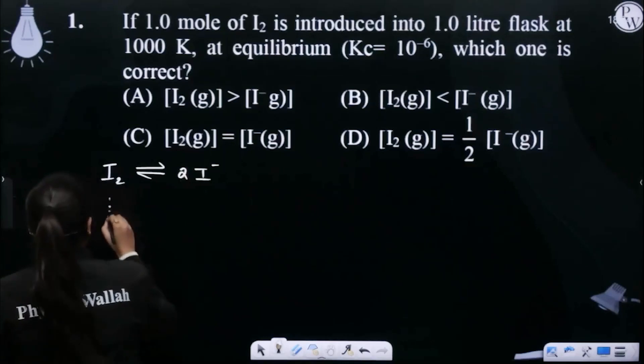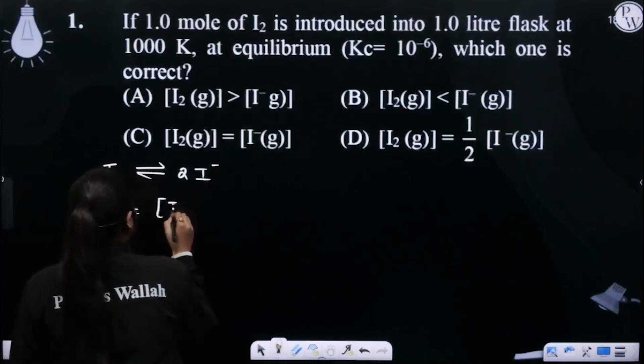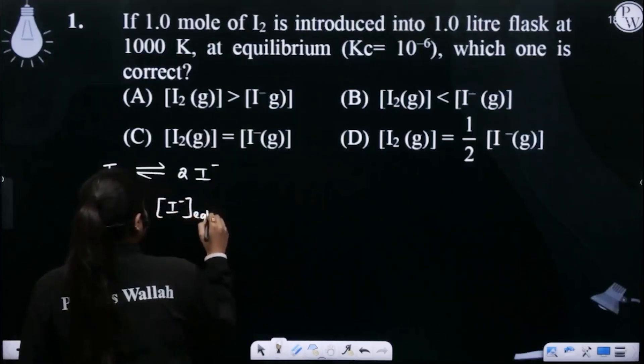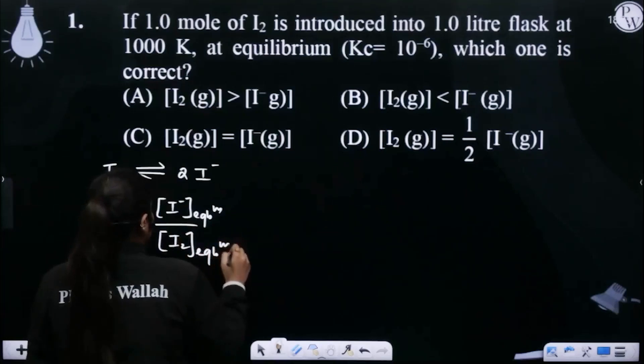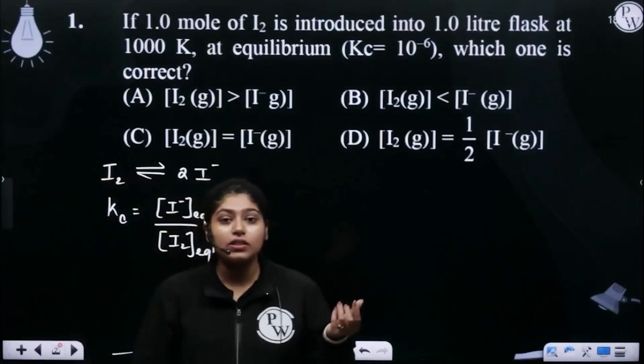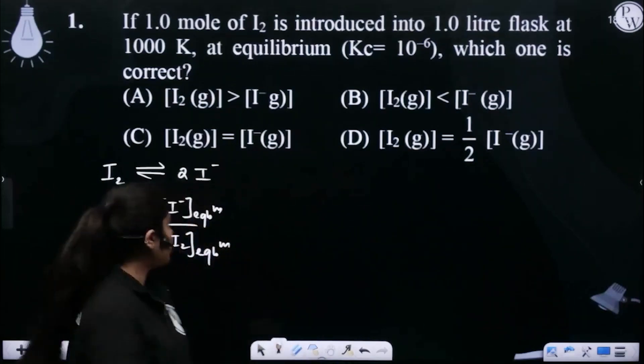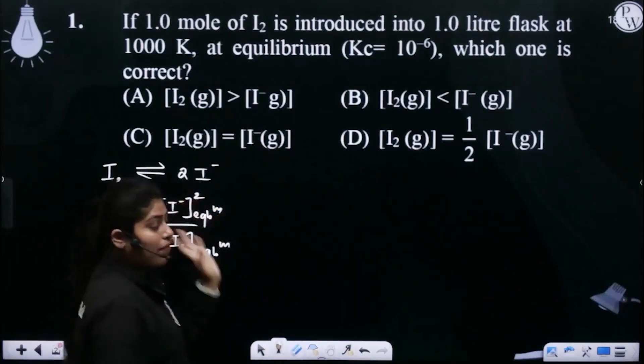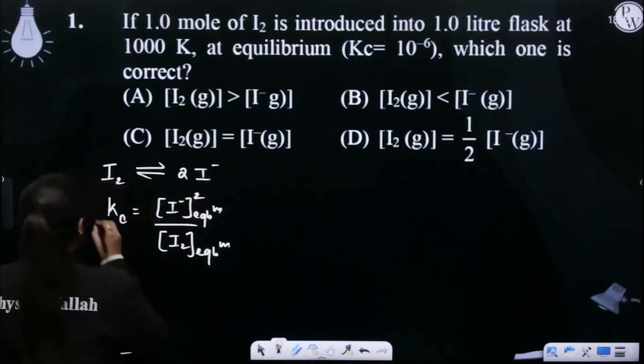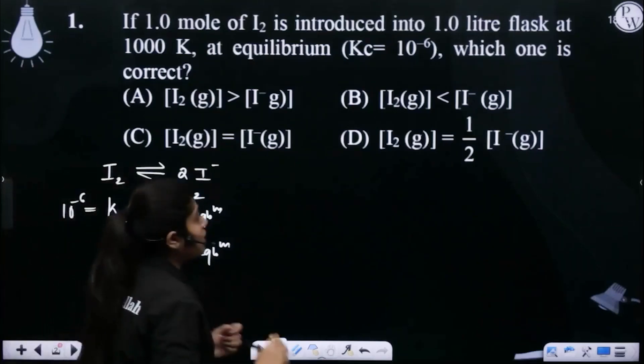Now, I will give this equilibrium constant 10 to the power minus 6. How can we write I2 concentration at equilibrium? Equilibrium constant is what? Product concentration upon reactant concentration, raised to the power of stoichiometric coefficients. So what will we calculate? Now, how do we calculate the value of Kc? 10 to the power minus 6.